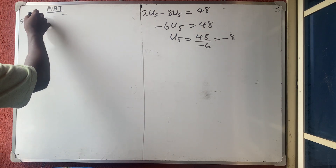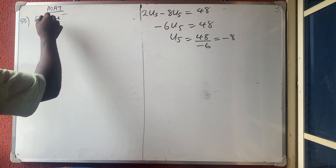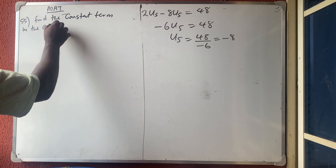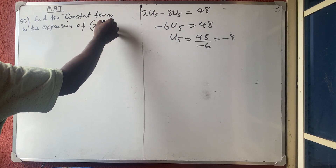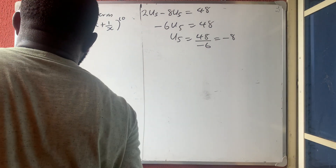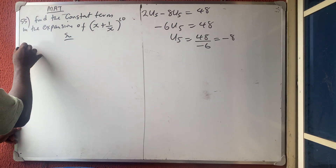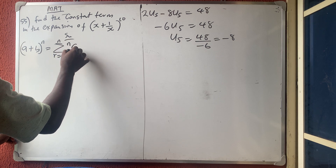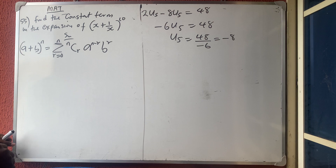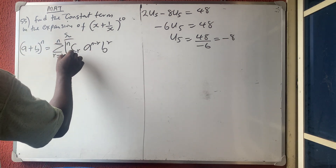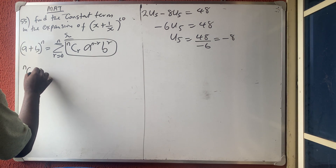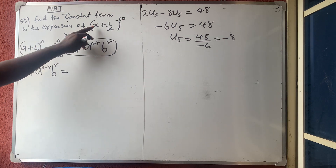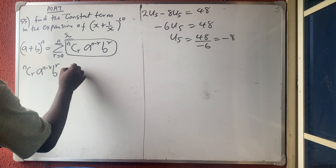Question 55: find the constant term in the expansion of (x plus 1/x)^10. We know that (a+b)^n equals the summation from r=0 to n of nCr times a^(n-r) times b^r. Since we want a particular term, we use: nCr · a^(n-r) · b^r, where n=10, a=x, and b=1/x.